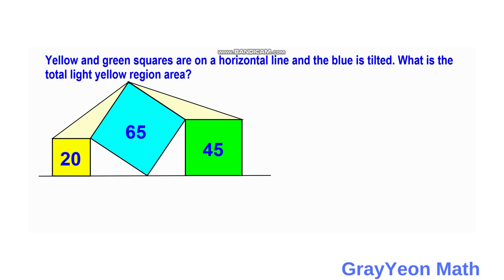Welcome to Grayon Math. We are asked to solve this problem: yellow and green squares are on a horizontal line and the blue square is tilted. What is the total light yellow region area?